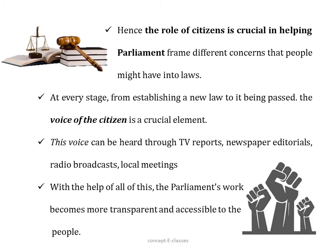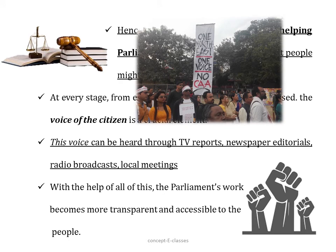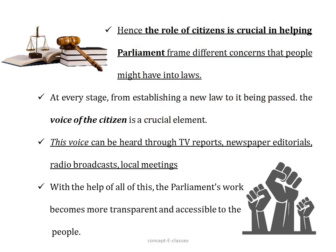Hence from this example, we can know that the role of citizens is very important in helping the Parliament frame the concerns of the people into laws. At every stage, from establishing a new law till it is being passed, the voice of the citizen is very important. And this voice of the citizen can reach the Parliament through TV reports, newspapers, editorials, radio podcasts, local meetings, etc. We have seen how the people raise their voice against a law or when they need a law through their protest and rally. With the help of all this, the Parliament's work becomes more transparent and accessible to the people.